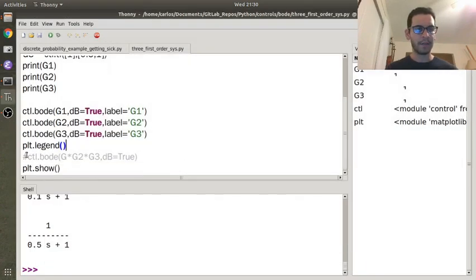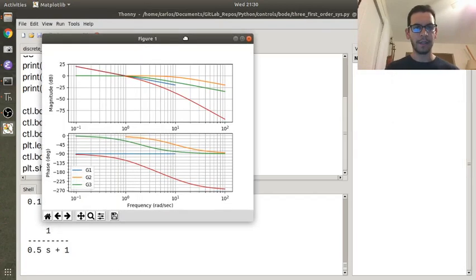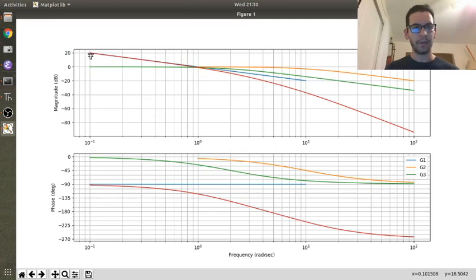So now what I do is I just multiply the three together, and you're going to get the red line. And so the red line, it is minus 20 dB for a decade here. As soon as it crosses the cutoff frequency of 2, it starts to roll off at minus 40 per decade.